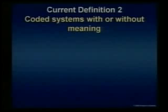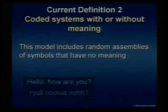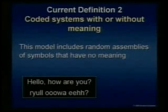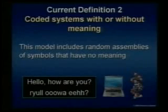The most popular definition of information is 'coded systems with or without meaning.' This model includes random assemblies of symbols that have no meaning. For example, there's a sentence 'Hello, how are you?' and below it the same letters scrambled — and we're told the scrambled bottom line has more information than the top line. Is there a logical disconnect here? Suppose your computer is on the blink and you call an engineer, and they take your entire operating system, scramble all the code, charge you five hundred dollars, and walk away saying 'you've got more information now.' That's exactly what that definition implies.